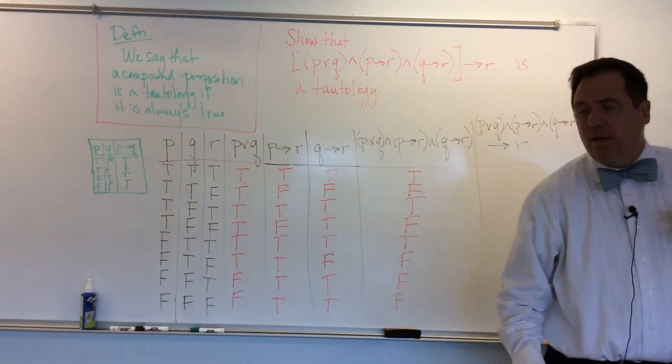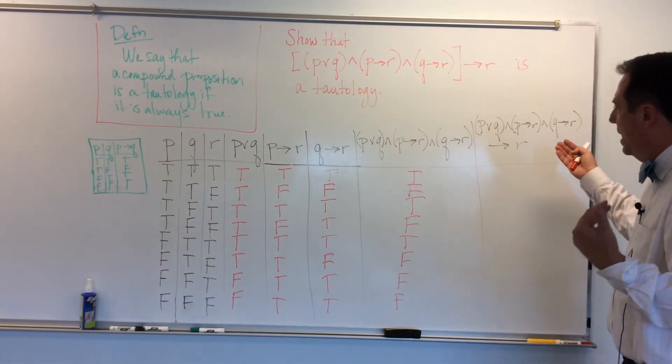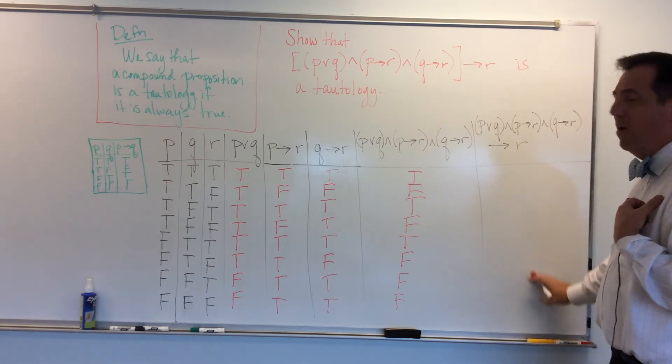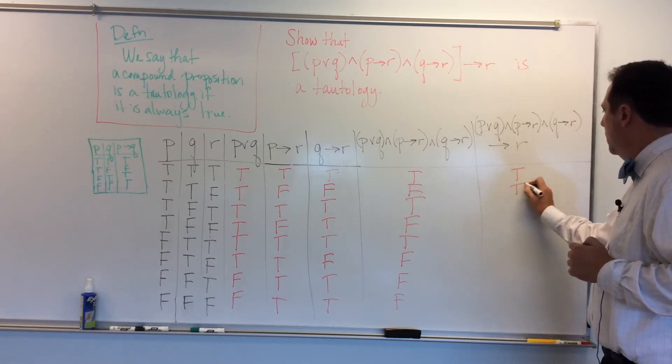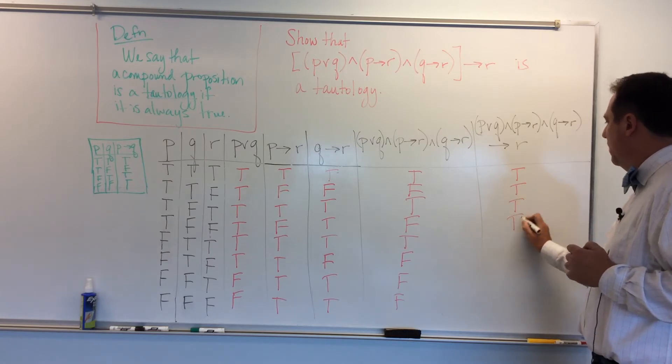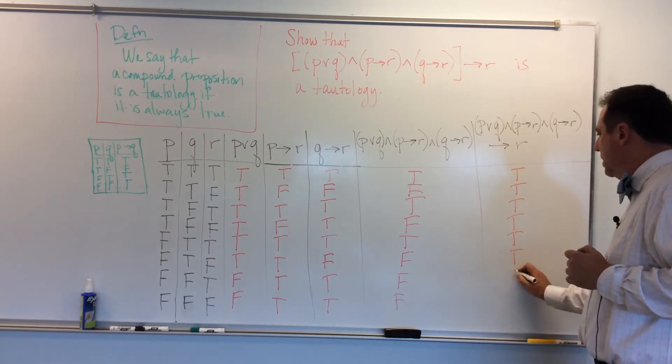Hey, guess what? Nowhere here, therefore, do I have the case where this is false. Well, what does that mean? It's all true. So I'm going to try to do this, right? It doesn't really matter if I line up rows now because it's all true.